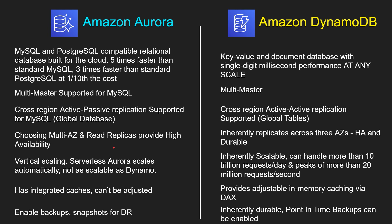For Amazon Aurora, you can choose multi-AZ and read replicas to provide high availability. Amazon DynamoDB inherently replicates across three availability zones — it is highly available and durable. If you need to increase CPU, Amazon Aurora does vertical scaling, requiring a more powerful EC2 instance. However, there is a new service called Serverless Aurora which scales automatically, though it is not as scalable as DynamoDB. DynamoDB is inherently scalable — it can handle more than 10 trillion requests per day and peaks of more than 20 million requests per second.